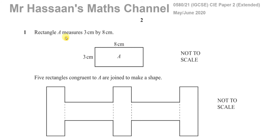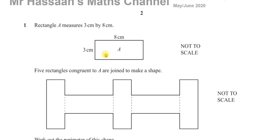Question number one gives us a rectangle A with a length of 8 and a width of 3 — not to scale. It says 5 rectangles congruent to A, meaning exactly the same size and shape, so each one has dimensions 3 and 8. They are joined together to make a shape.